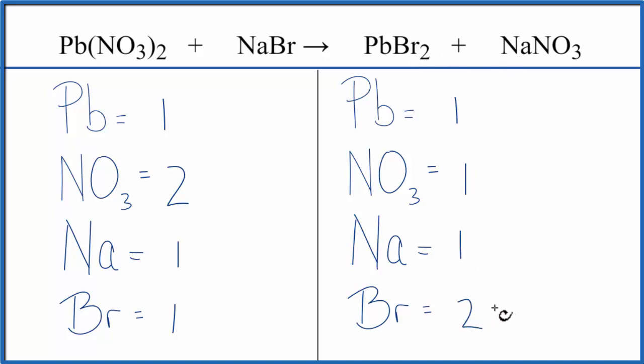Let's start by balancing the bromines here, because we could just put a 2 in front of the NaBr, then Br 1 times 2, that'll give us 2, and then 1 sodium times 2.